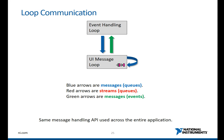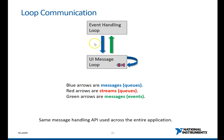In the QMessage Handler template, there are two loops that exist. One is the event handling loop and the second one is the UI message loop. The UI message loop works as a bridge between the event handling loop and the multiple other while loops that you have created.